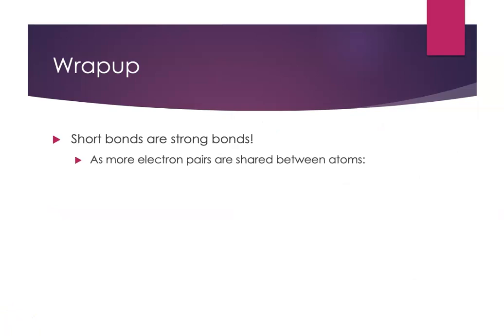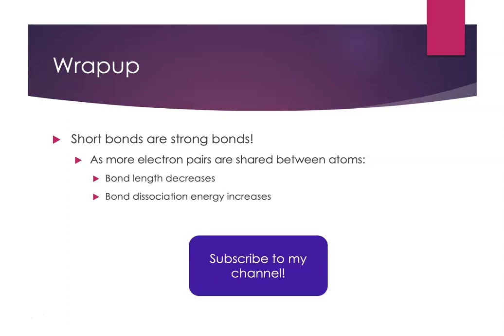Here's the final wrap-up: short bonds are strong bonds. As more electron pairs are shared between the atoms, the bond length decreases and the bond dissociation energy increases. Subscribe to my channel to get all my latest videos, and study chemistry every day — that's how you get better.